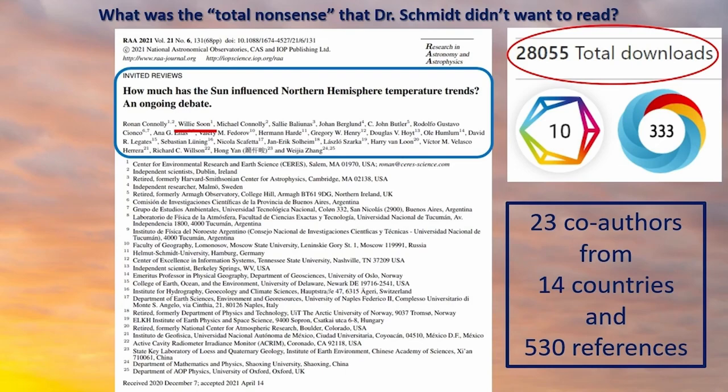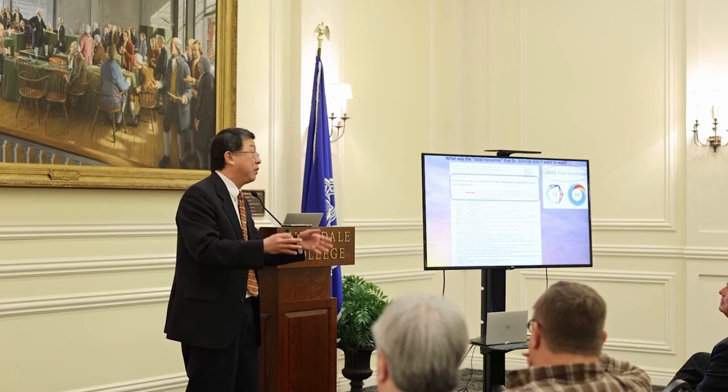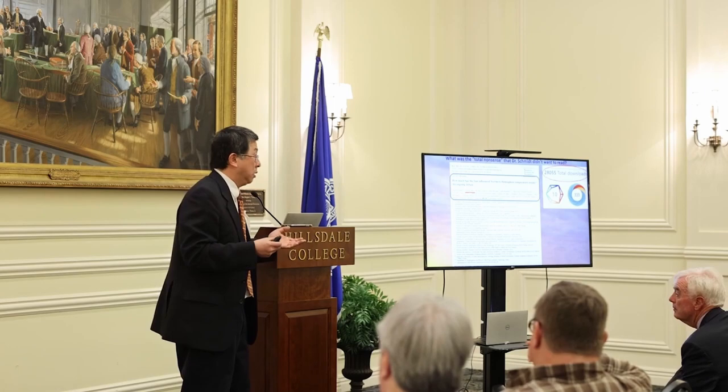What is the paper that we did that is so offensive? It's a paper published in 2021, asking a very simple question: how much has the sun's influence affected the northern hemisphere temperature record? The paper is so well downloaded — 28,000 downloads already — which for science is highly unusual. You'd be lucky if 10 people read your paper. We got 23 co-authors, and Professor Legate is one of them.